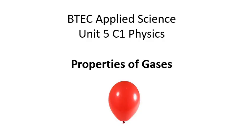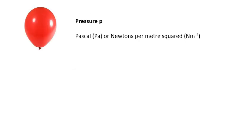Properties of gases — first, pressure. We're going to measure pressure in Pascals, or newtons per meter squared. A Pascal is a newton per meter squared; they are the same thing. It's the SI unit of pressure, the Pascal.